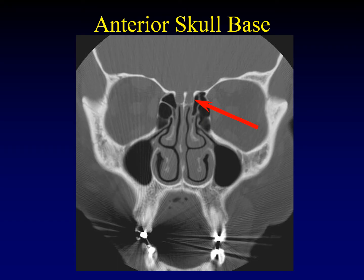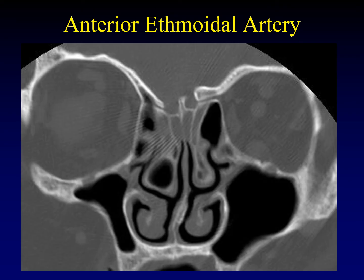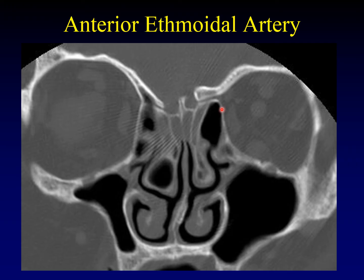The lateral lamella normally has a couple of defects for the anterior and posterior ethmoid arteries, so not all gaps in the lateral lamella are abnormal. Right down the center is the crista galli, which separates the two olfactory grooves from one another. There is a normal gap in the lateral lamella for the anterior ethmoidal artery. The anterior ethmoidal artery runs from the orbit, through the ethmoid air cells — sometimes just above them — across the lateral lamella and into the olfactory groove. It's usually most evident as it pierces through the lateral lamella.